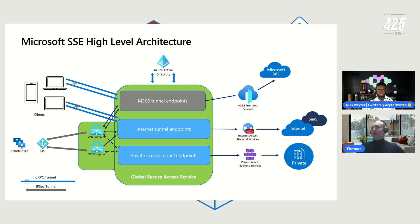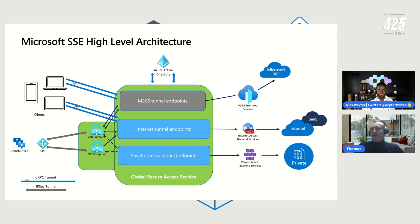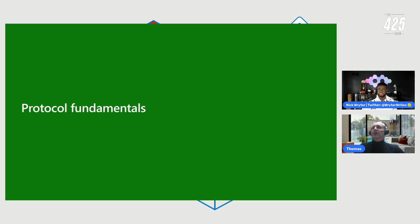A key differentiation: when an agent is running on a client, gRPC tunnels are used; in the branch scenario, IPsec tunnels are used — each requiring different troubleshooting approaches. Today's session focuses on gRPC-based tunneling from clients. A separate session on branch/IPsec scenarios can be arranged if there's audience interest.